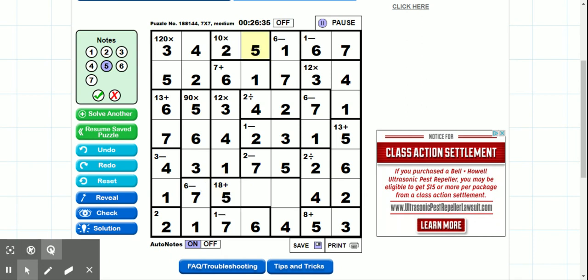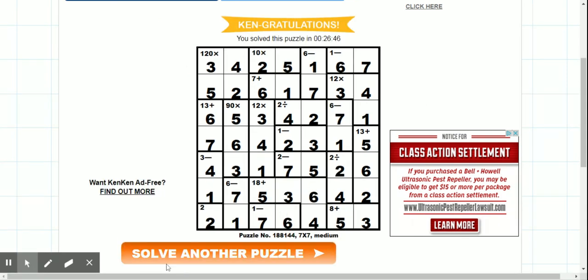Great. So we only have two boxes left. They're both in this row. So what's missing from this row? We're missing a 3 and we're missing a 6. Well, this column already has a 6 in it. So that has to be a 3. And that has to be a 6. And we're done.